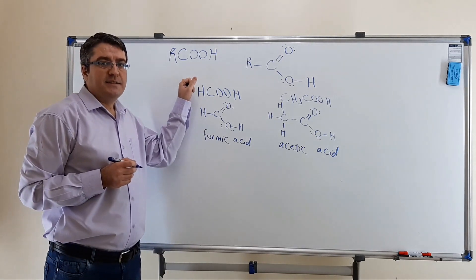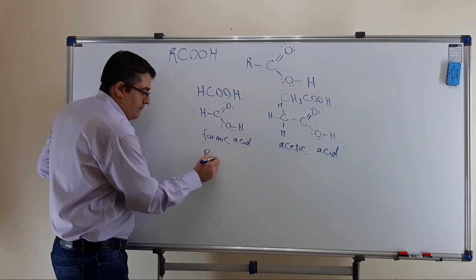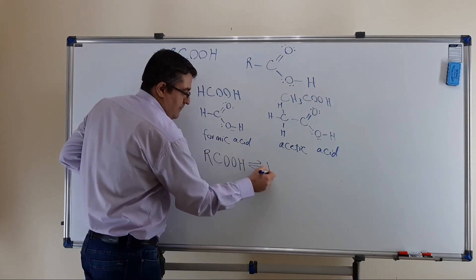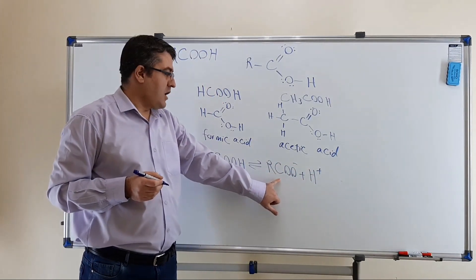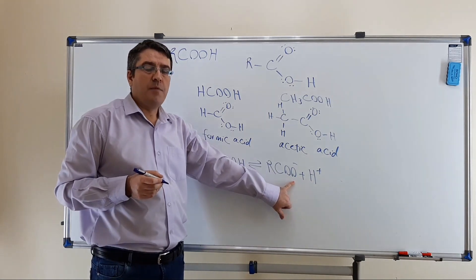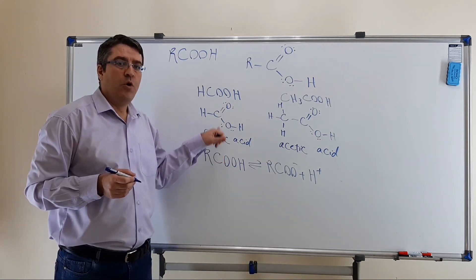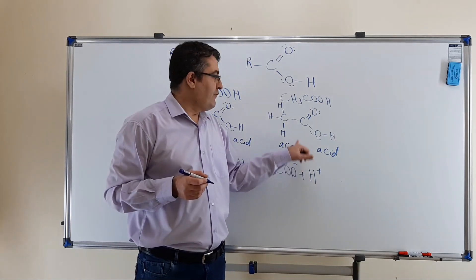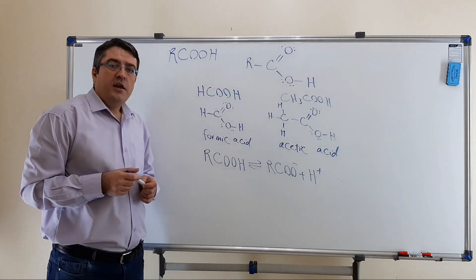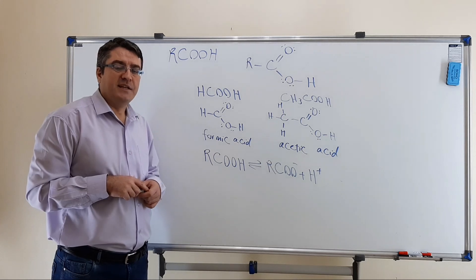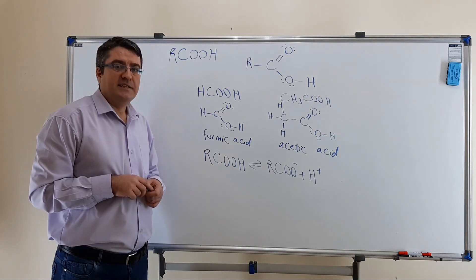For carboxylic acids, we can consider the acid dissociation reaction, where the conjugate base R-COO⁻ is named the carboxylate anion. For example, the formate anion for HCOO⁻, and the acetate anion for CH3COO⁻. In aqueous solutions, carboxylic acids are not usually strong acids — they are generally weak acids.